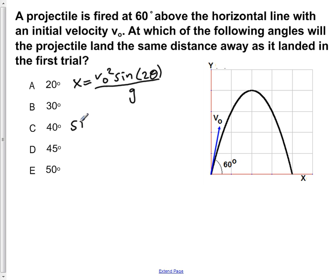So we have to find what other value will give us the same as sine of 2 times 60, which is the same as sine of 120 degrees, which is 0.866.